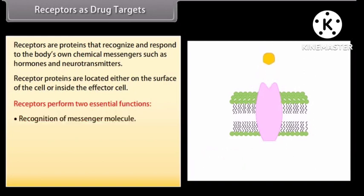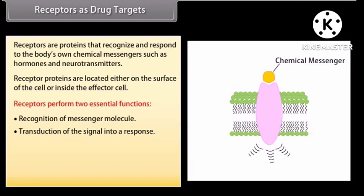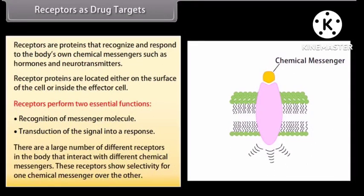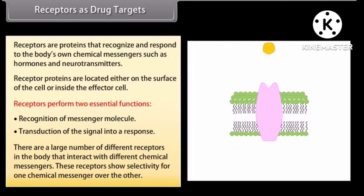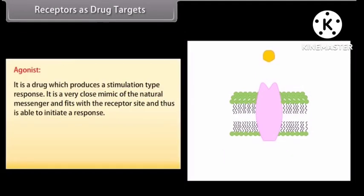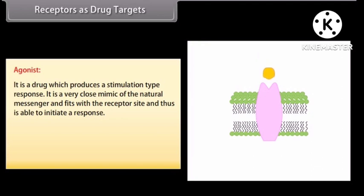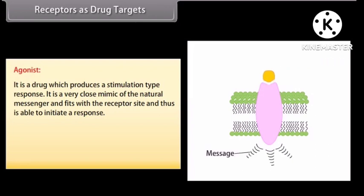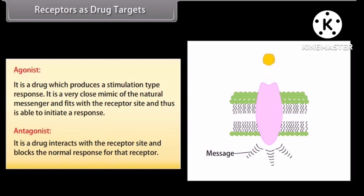Receptors perform two essential functions: recognition of the messenger molecule, and transduction of the signal into a response. There are a large number of different receptors in the body that interact with different chemical messengers, and these receptors show selectivity for one chemical messenger over another. An agonist is a drug which produces a stimulation-type response — it is a very close mimic of the natural messenger, fits with a receptor site, and is able to initiate a response. An antagonist drug interacts with the receptor site and blocks the normal response for that receptor.